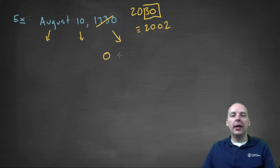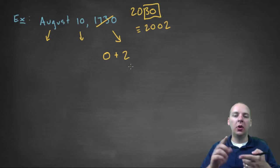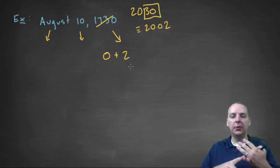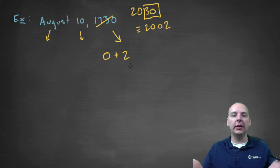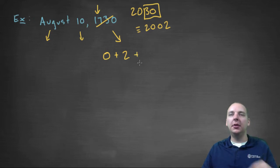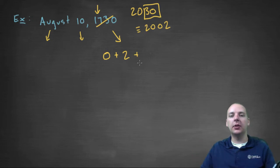The year 2000 had a year code of 0 — that's one of the ones we had memorized. And 2002 is two years past that. You're always going to add nothing if it is a leap year, one if it's one year after a leap year, or two or three if it's two or three years after a leap year. You would never add four, because you'd be at the next leap year anyway. So we're going to add two — that's the year code for 2030. But now we have to make the adjustment for the century: the 1900s you add one, the 1800s you add three, the 1700s you add five. So we're going to add five.